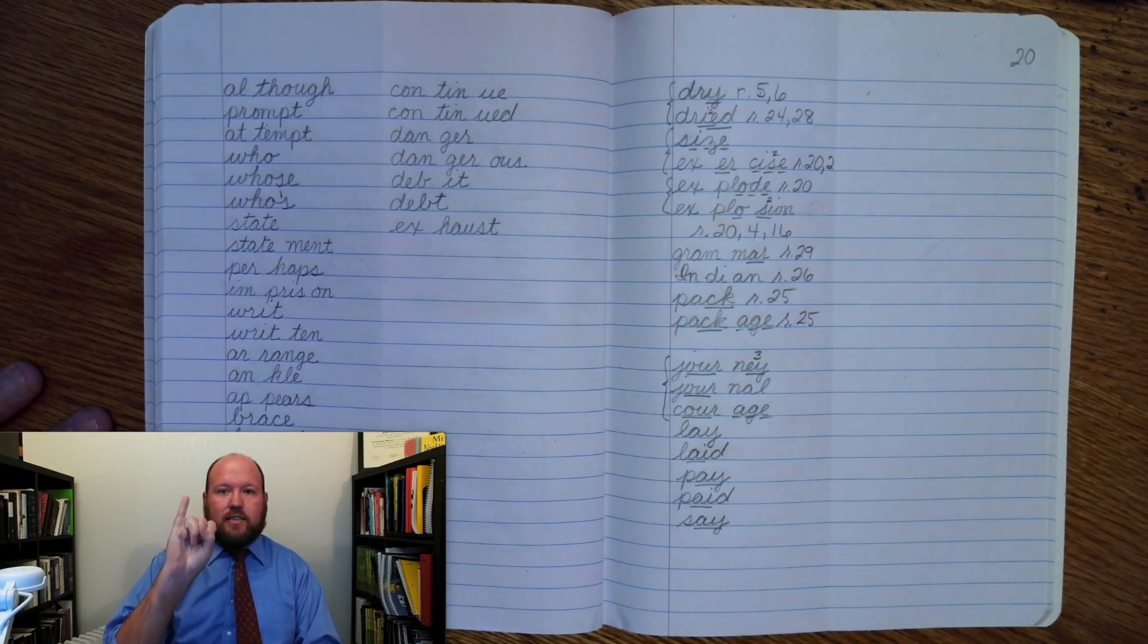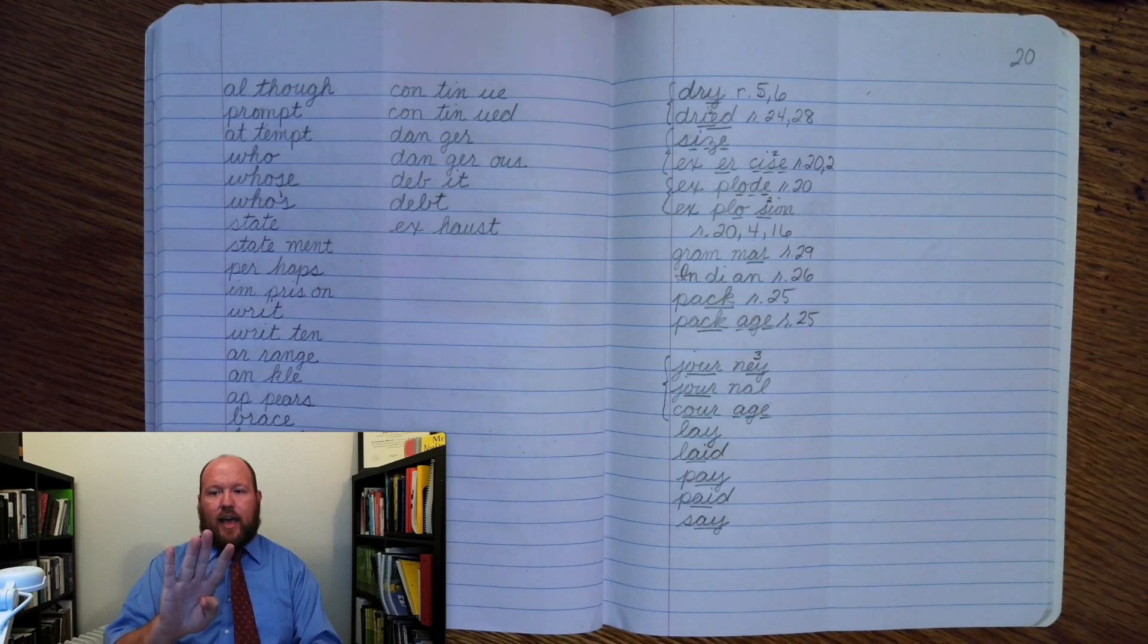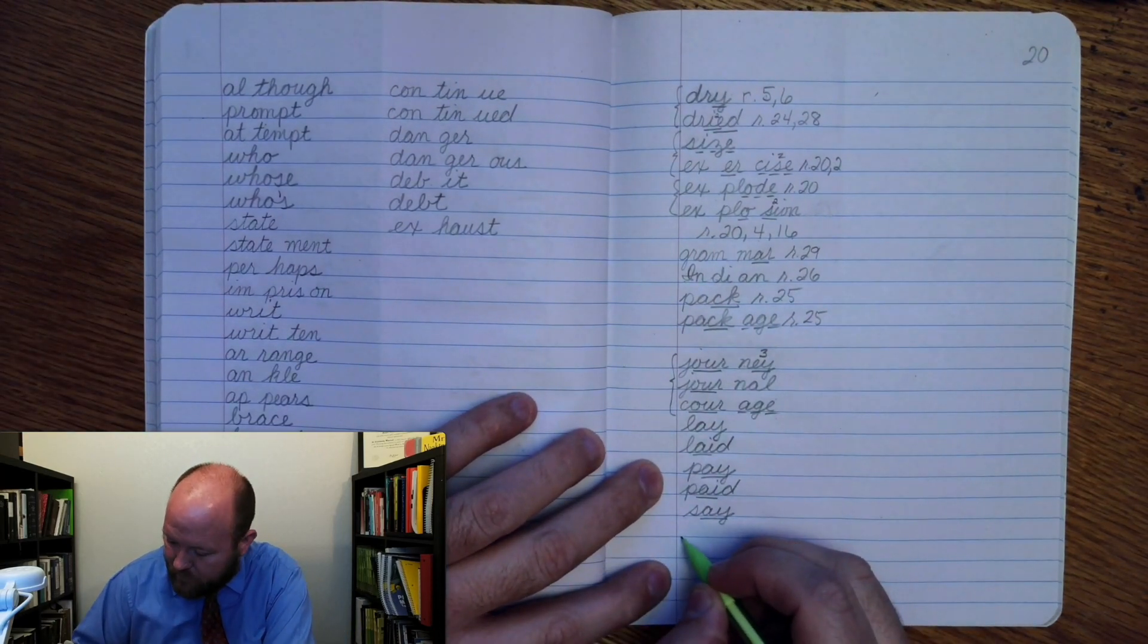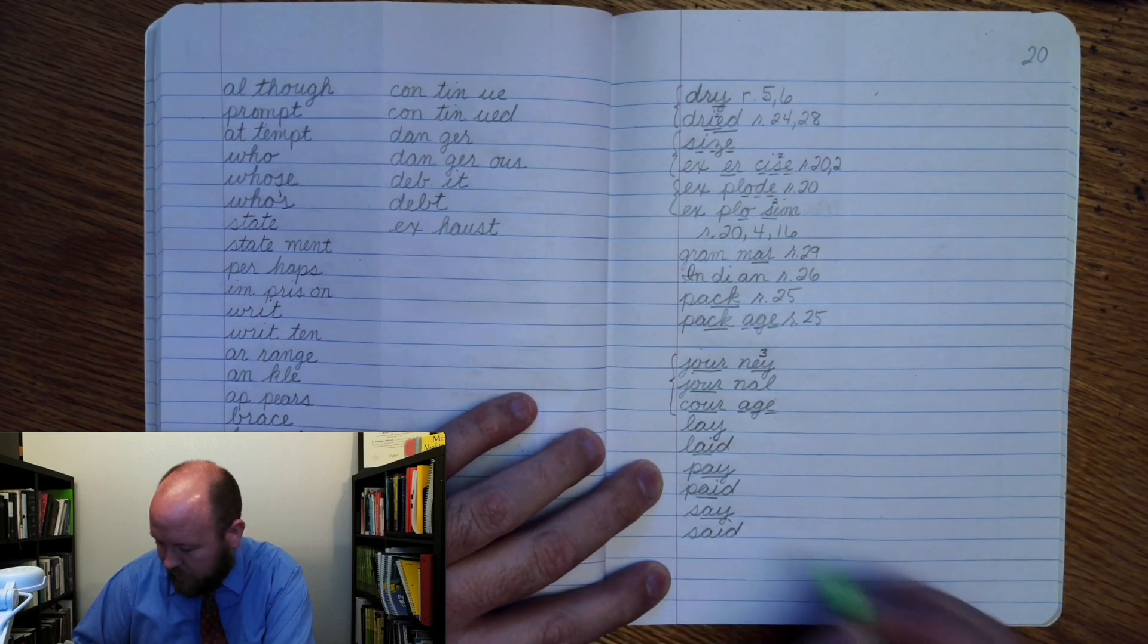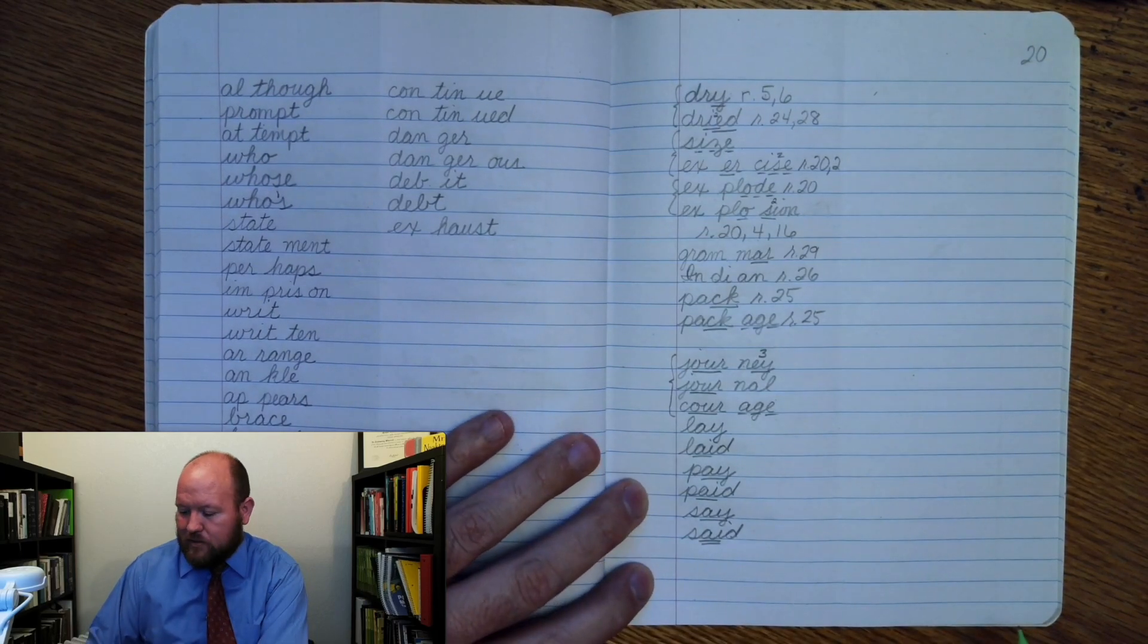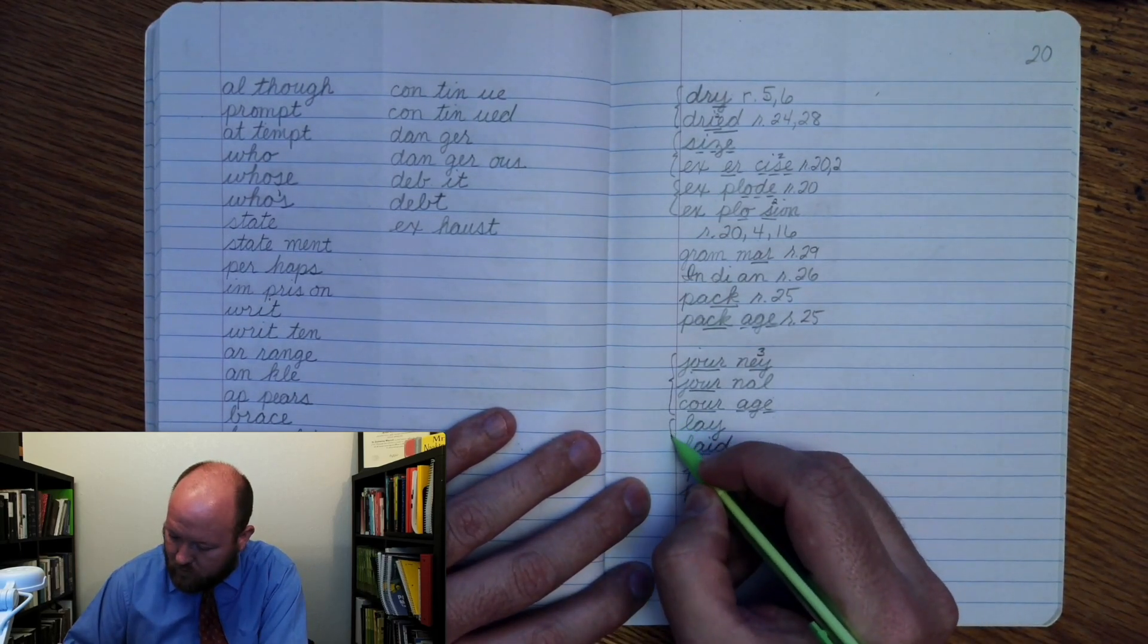But it follows the same pattern as laid and paid, and that'll be helpful to you in remembering that. It follows the same pattern as laid and paid, it just doesn't say 'said', it says 'said'. So said: S-A-I-D. Said, and we're going to double underline that. Go ahead and write it. Said: S-A-I-D. Markings: S-A-I-D twice, 'ed'. Said. So go ahead and brace that.